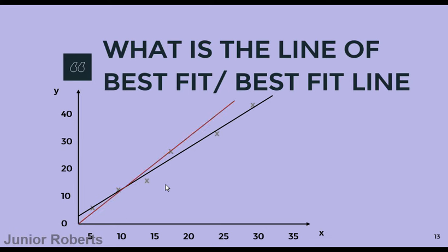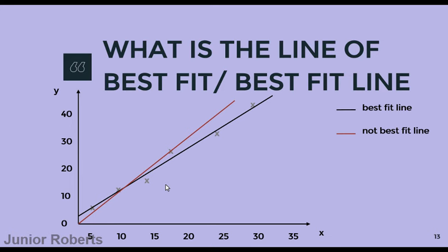Some students might choose to draw a different line as their best fit line because of the misconception that the best fit line must pass through the origin — and that is not so. The best fit line is always the line that shows the best average of all the points. The dark colored line is our best fit line because it passes through as many points as possible and shows an even distribution. The red line, by contrast, has three points on one side and only one on the other, so it is not the best fit line.